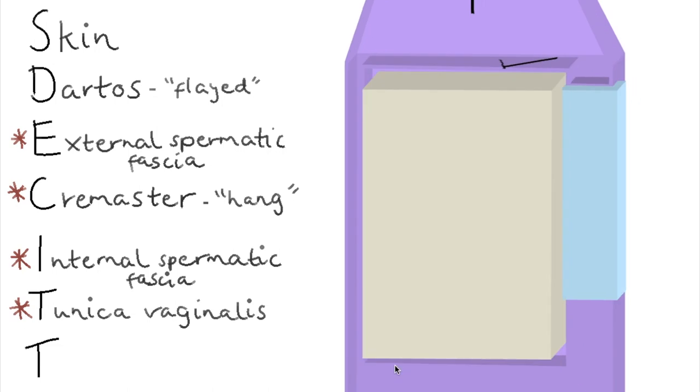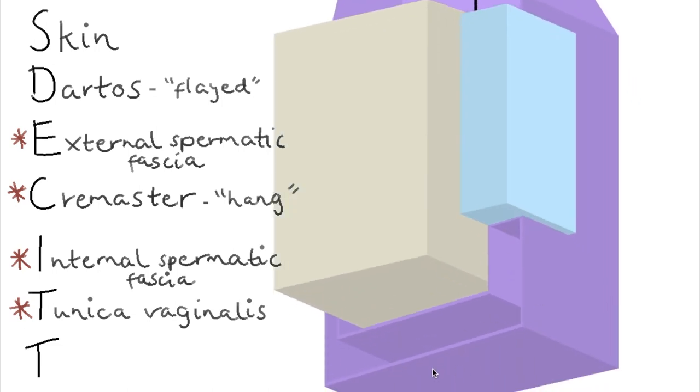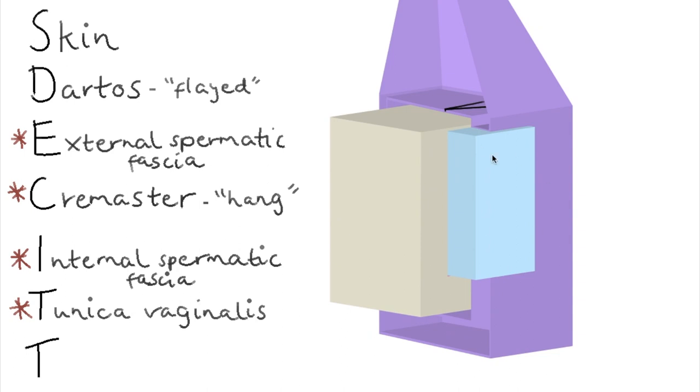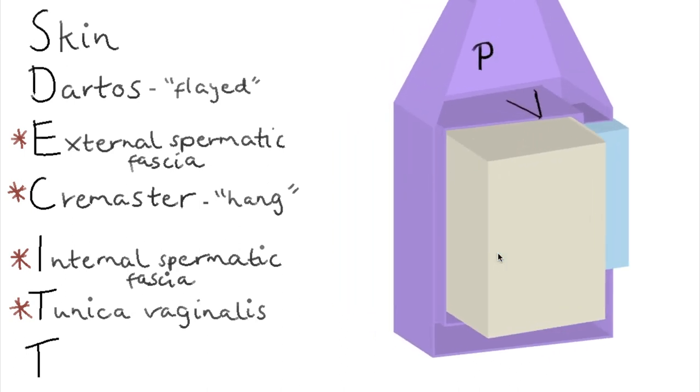And you'll hear that word a bit in anatomy, reflection. It just means that the tissue is folding back in the direction that it came from. Around the back, I've deliberately enlarged the open space here to make that reflection look a bit more obvious.